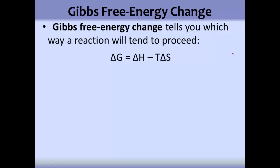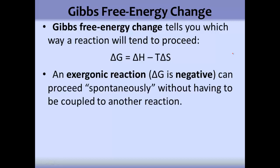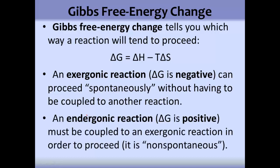In this tutorial I'm going to talk about free energy and the Gibbs free energy change equation. The Gibbs free energy change can tell you which way a reaction will tend to proceed. An exergonic reaction, where delta G is negative, can proceed spontaneously without having to be coupled to another reaction. But an endergonic reaction, where delta G is positive, has to be coupled to an exergonic reaction in order to proceed — in other words, it's non-spontaneous.